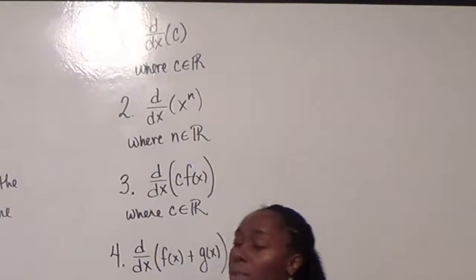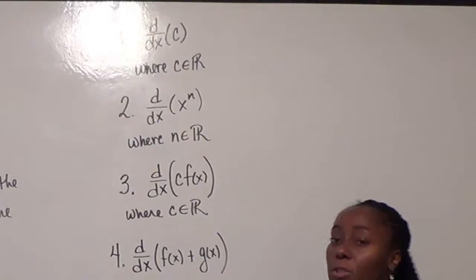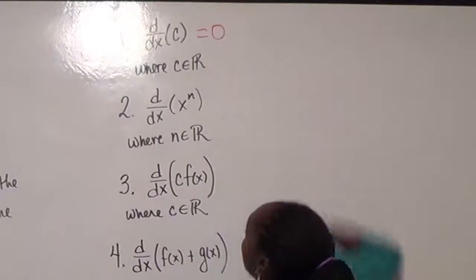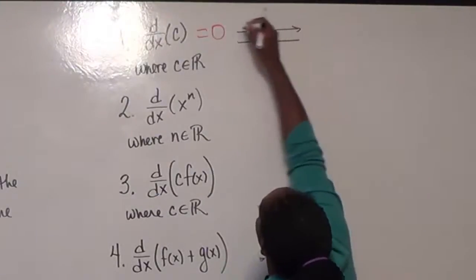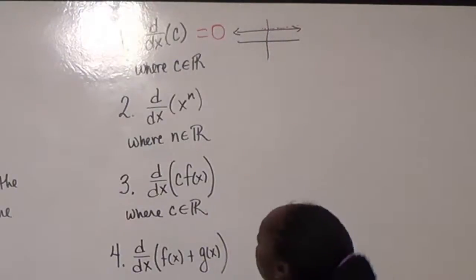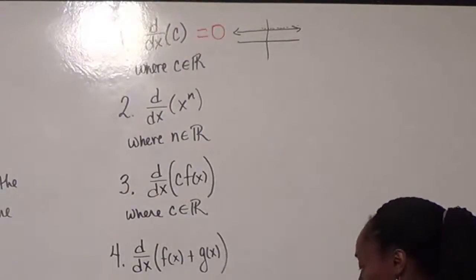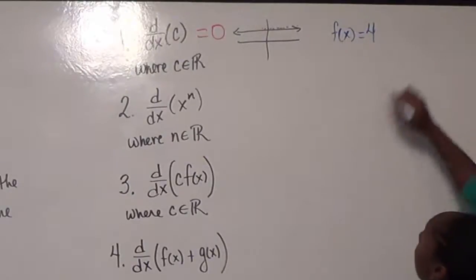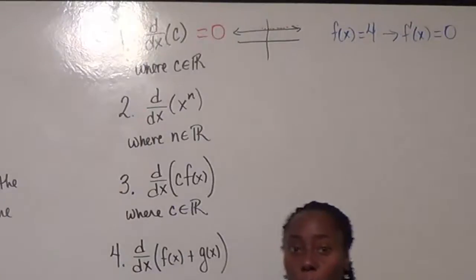The first one is: if I have a function that is a constant - so c here is a real number - if I'm looking at the derivative of that constant, well, if we think of that as the slope of the tangent line, this is just going to be zero. What this is saying is that if I have a function that is a horizontal line, then for any point I pick, the tangent line is going to be horizontal as well, and the slope of that tangent is just zero. An example of this would be, let's say that f(x) is equal to 4, then f'(x) is just going to be zero. The slope of the function 4 is just zero.